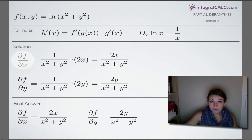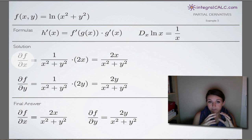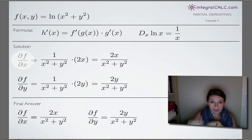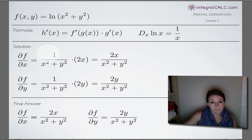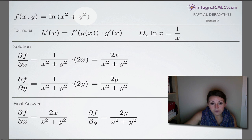For the partial derivative of f with respect to x, using chain rule, we're going to first take the derivative of the outside function — which is the natural log function — leaving the inside function, x squared plus y squared, completely alone. Then we'll multiply by the derivative of the inside function. Taking the derivative of ln, knowing that the derivative of the natural log function is 1 over x, we end up with 1 over (x squared plus y squared), leaving the inside of this function intact.